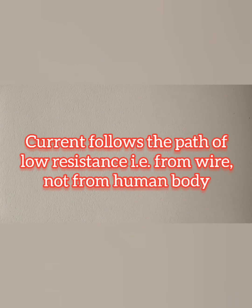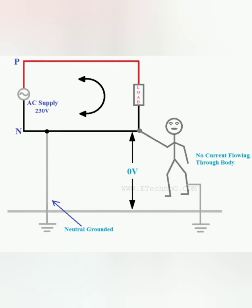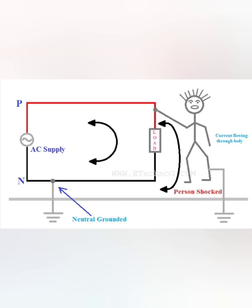Wire resistance is negligible compared to human body resistance. So current flows from which path? Exactly from the wire where wire resistance is very low, about 0.002 ohm. So that's the reason current flows from the wire, not from the human body.